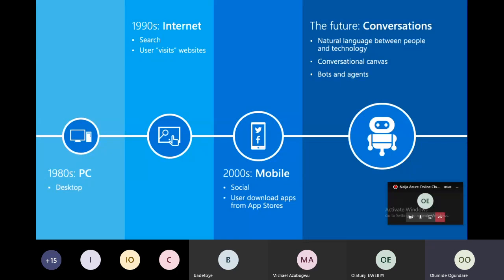In the 2000s, we had a lot of mobile phones, and people started doing social media. The main social media when mobile phones came in was Facebook, then Twitter, BlackBerry Ping, and all those things. What most people used the mobile phone for was to chat. Now we see that we are approaching a future whereby natural language between people and technology will be the main thing — technology will be able to understand humans, understand what humans want, and how to interact with them. This is actually what the future holds.